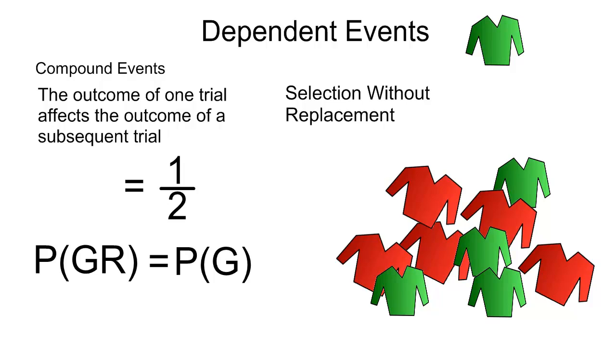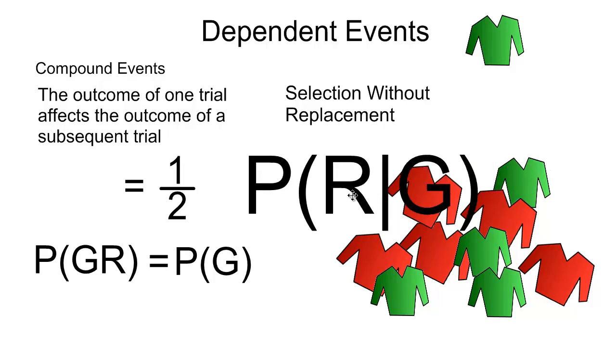And then the next little bit of notation is the probability of selecting a red cardigan given that I've already selected a green cardigan. Because selecting that green cardigan has changed the outcome, has changed the sample space of my trial.